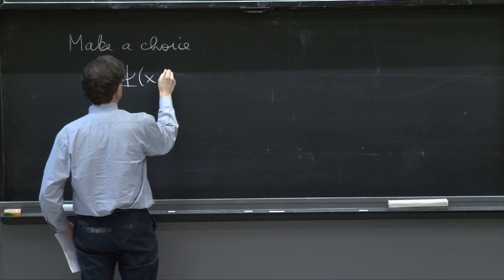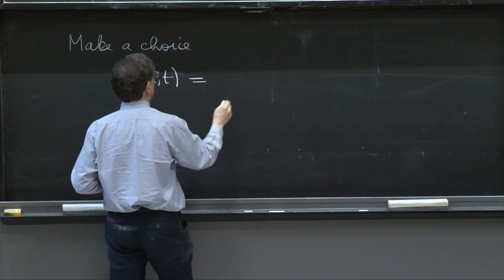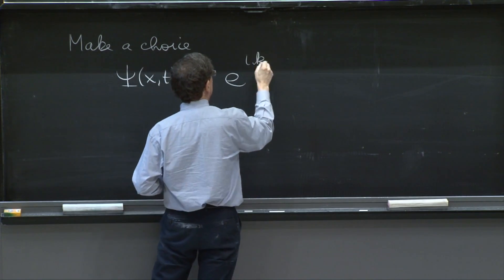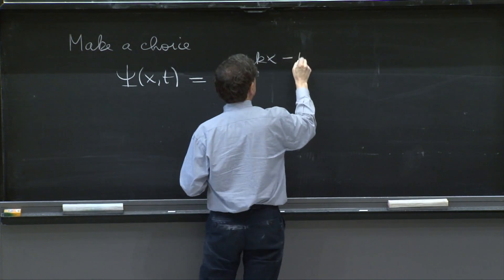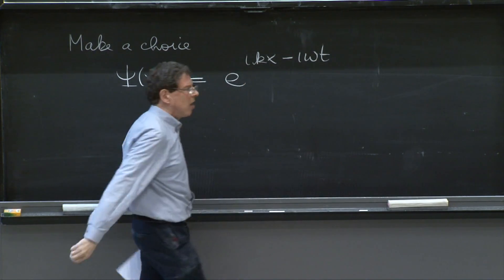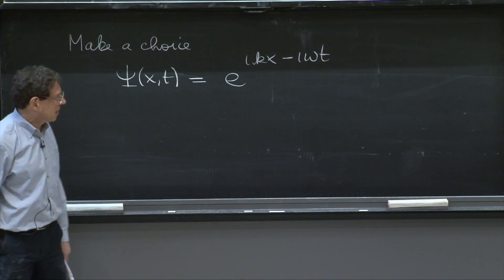And here is the choice. Psi of x and t equal e to the ikx minus i omega t. The energy part will always have a minus sign.